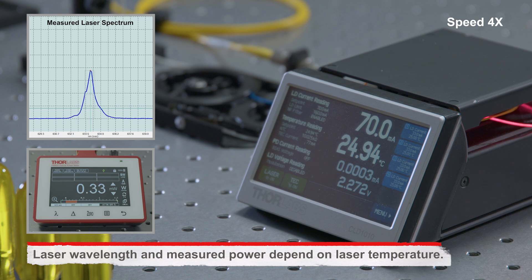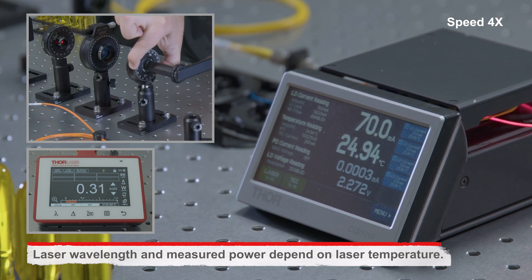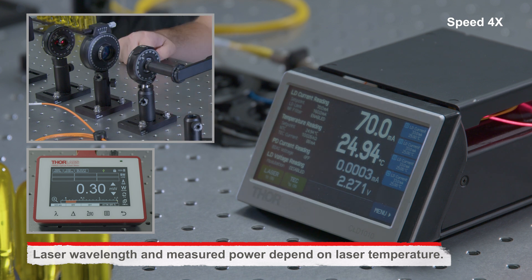Now, the power seems pretty stable, so I'll rotate the analyzing polarizer. Now, the powers are about the same. Now, the polarization after the wave plate should be circular.